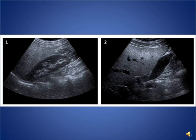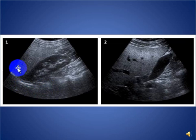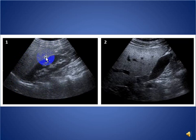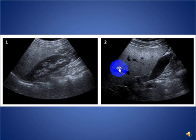My topic today is about presenting a case of ultrasound of the liver. As you can see here, there is diffuse increased echogenicity of the liver compared to the renal cortex, and it is almost equal to the renal sinus echogenicity.